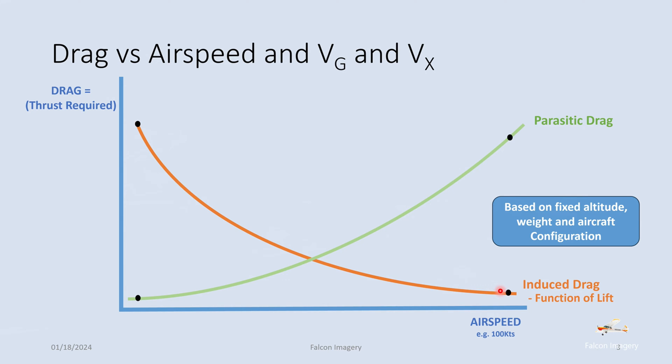Parasitic drag works in the opposite direction and increases as the square of the airspeed. Types of parasitic drag include form drag — the shape of the aircraft, antennas, landing gear, etc. Then we have skin friction drag: literally the surface of the wings and fuselage, which isn't perfectly smooth — there are microscopic bumps, rivets, etc., that all cause friction. And then we have interference drag, where for example the strut connects to the wing or the wing connects to the fuselage. All these types represent parasitic drag, which increases as the square of the airspeed.